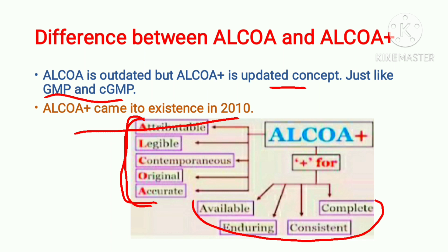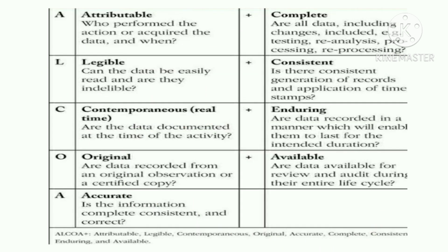The full form of ALCOA is: Attributable, Legible, Contemporaneous, Original, and Accurate. Now we will see in detail the meaning of these five terms. Attributable means who performed the action and acquired the data — that is, who performed the action, at what date and time it was performed — and that information should be mentioned in the documents.